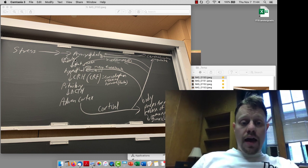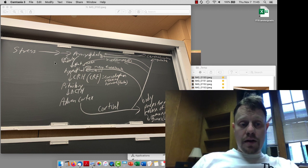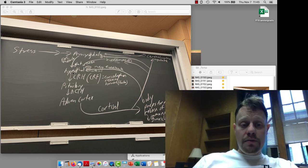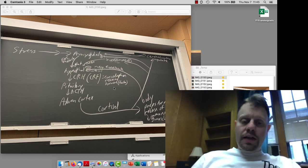So stress externally or internally can come from the cerebral cortex or from external stimuli and feeds into the amygdala, which then will excite the hypothalamus. That then causes CRH, also known as CRF, to be released.